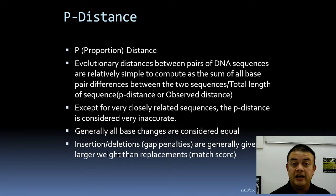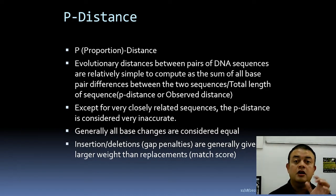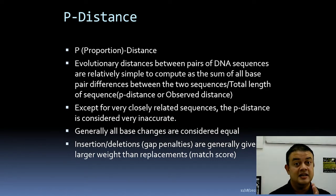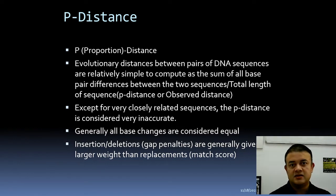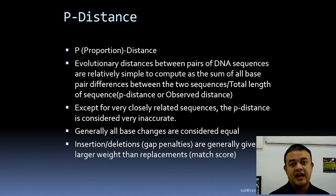For example, comparing a cat and a human using the cytochrome c oxidase gene — let's say it is a thousand base pairs long. If after alignment the cat and human sequences differ at 10 sites, then 10 divided by 1000 gives the p-distance between cat and human. That's it — the observed distance or p-distance is simply the proportion of differences.